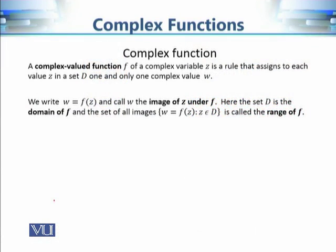Let's precisely define a complex function. A complex-valued function of a complex variable z is a rule that assigns to each value z in a set D one and only one complex value w. Here z is the independent variable and w is the dependent variable. The set D is called the domain, which is a subset of the complex plane, and w is the image of z under f. The set of all image values is called the range of the function.